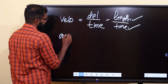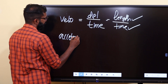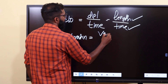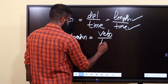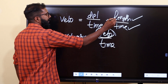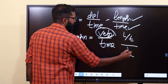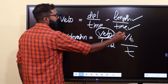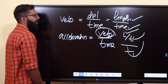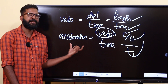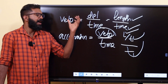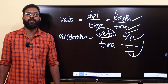Similarly, acceleration is equal to velocity divided by time. This gives us length divided by time, divided by time again. Since T is the fundamental quantity and length is fundamental, acceleration is also a derived quantity — because it is formed from fundamental quantities.